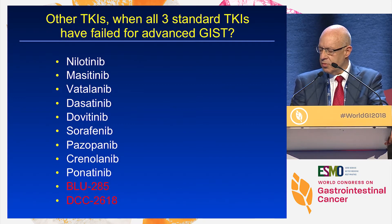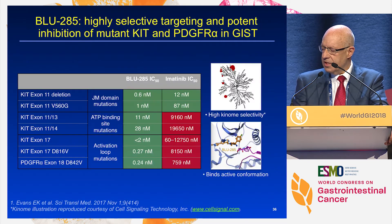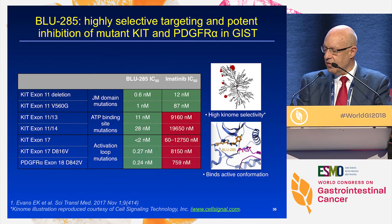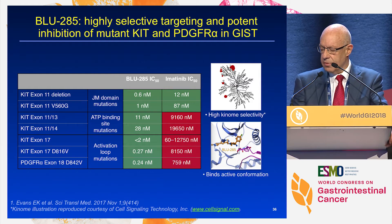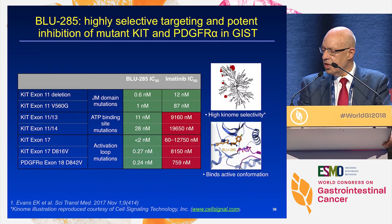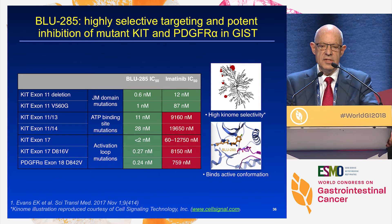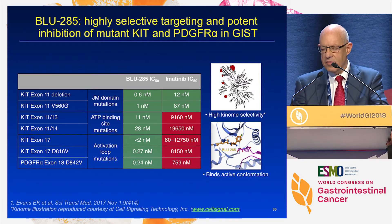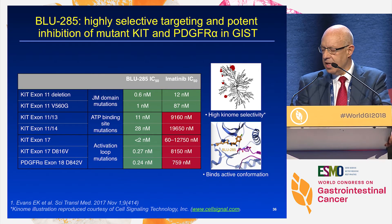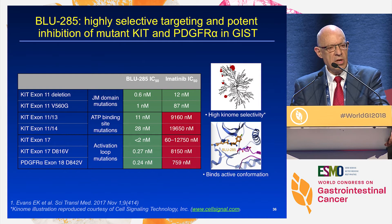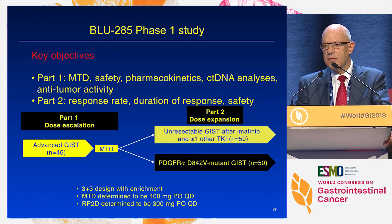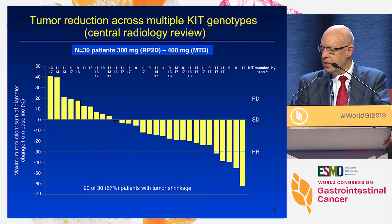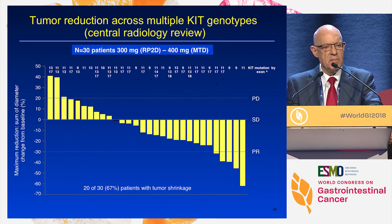However, the two drugs in red at the bottom are now going into or are in phase three — that's BLU-285 and DCC-2618. Here's BLU-285: looking at the IC50 differences, imatinib has an IC50 of around 700 nanomoles, compared to BLU-285 at 0.24 nanomoles — so a very powerful and very selective inhibitor of the exon 18 D842V mutation, which is known to be resistant to imatinib. A phase one study was done with escalation into phase two, and about two-thirds of patients experienced tumor shrinkage.